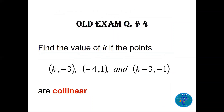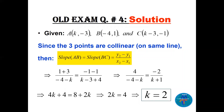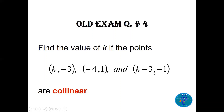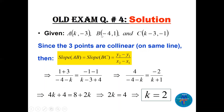Question 4: find the value of k if these three points are collinear. Collinear means the three points lie on the same line. I'll call them A, B, and C. If all three points are on the same line, any two pairs give the same slope. So slope(A,B) equals slope(B,C).